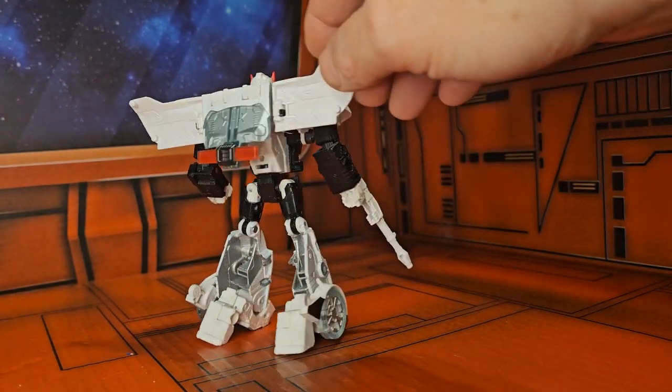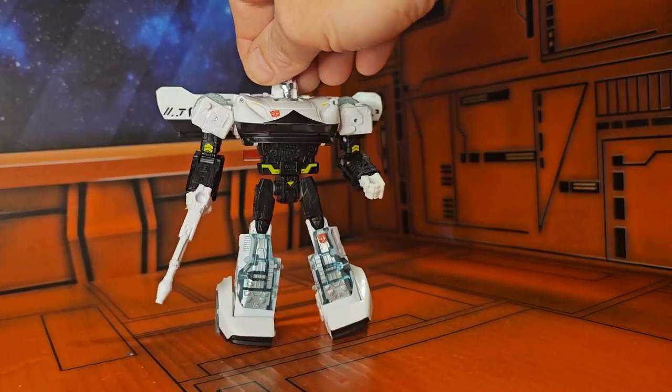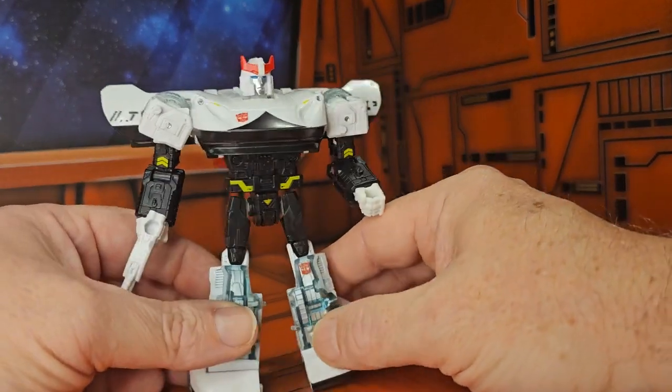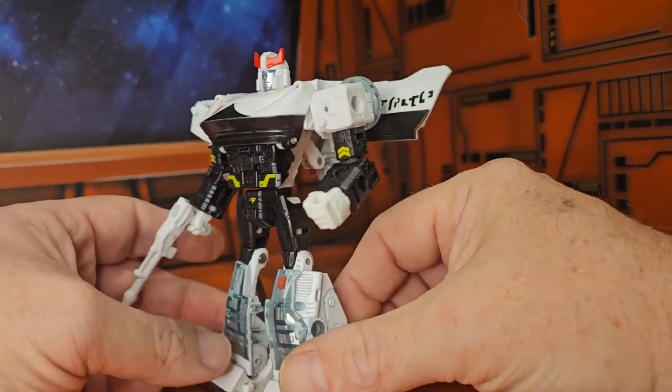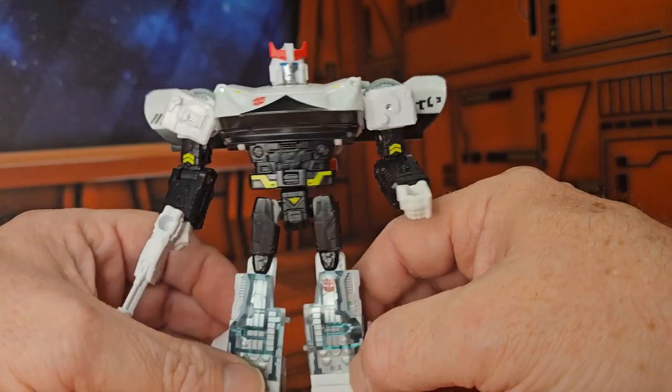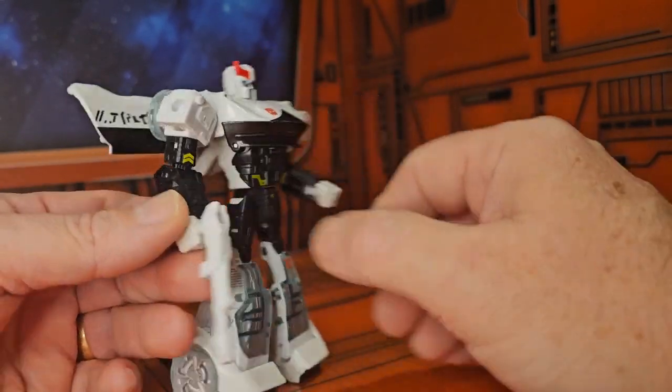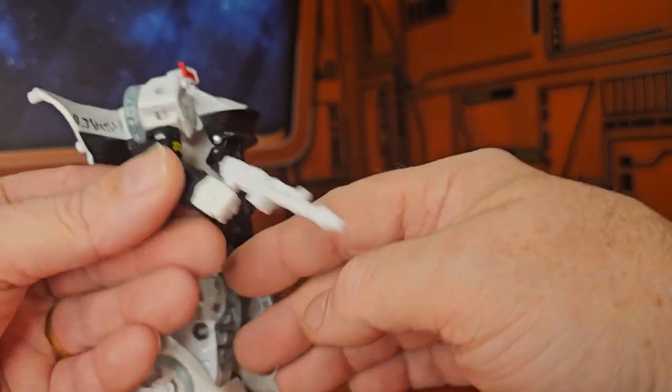Now this guy is definitely cool, coming in at five and one eighth inch tall. He comes with a white looking gun.